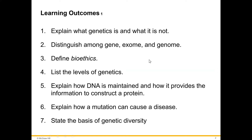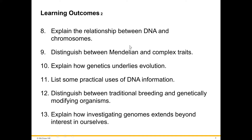By the end of these two lectures, you will be able to explain what genetics is and what it is not, distinguish among gene, exome, and genome, define bioethics, list the levels of genetics, explain how DNA is maintained and how it provides information to construct a protein, explain how mutation can cause a disease, and state the basis of genetic diversity. In addition, you will be able to explain the relationship between DNA and chromosomes, distinguish between Mendelian and complex traits, explain how genetics underlies evolution, list some practical uses of DNA information, distinguish between traditional breeding and genetically modifying organisms, and explain how investigating genomes extends beyond interest in our cells.